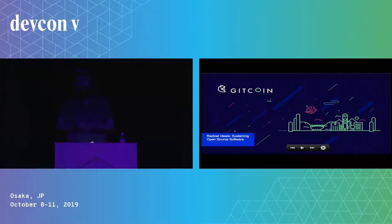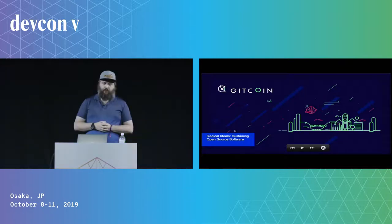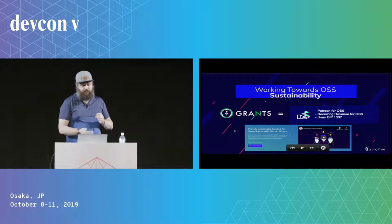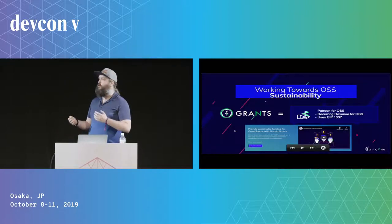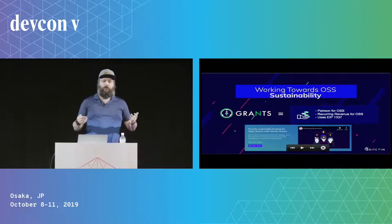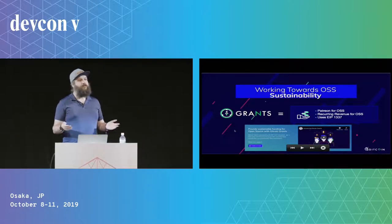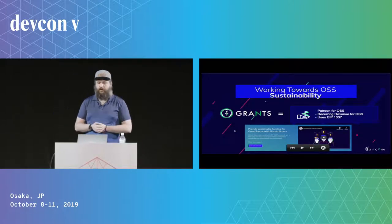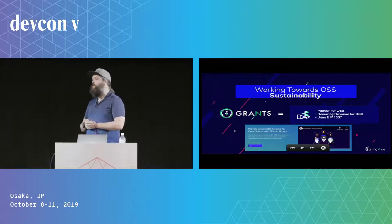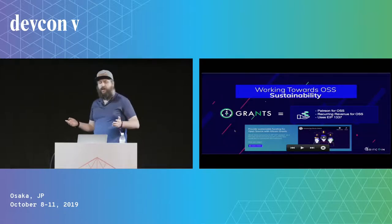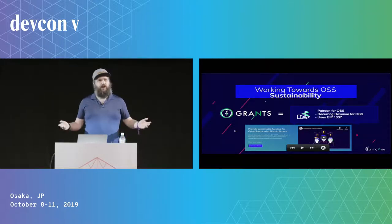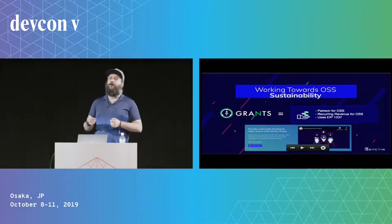My name is Dan Lippert, I'm the VP of Engineering at Gitcoin, and today I'm going to talk about sustaining open source software. So what do we do at Gitcoin? We try to sustain the open source community, and one of the ways we've done that is earlier this year we launched our grants project — basically Patreon but for open source software.